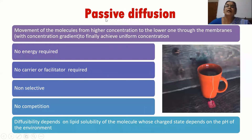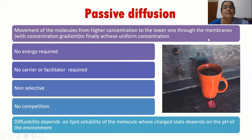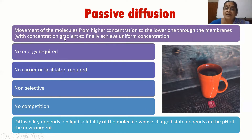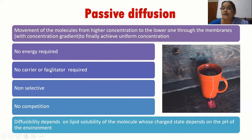Firstly, passive diffusion. It is the movement of molecules from higher concentration to lower concentration through membranes, with the concentration gradient, to finally achieve uniform concentration. No energy is required, no carrier or facilitator is required. It is non-selective and there is no competition because there is no carrier involved.